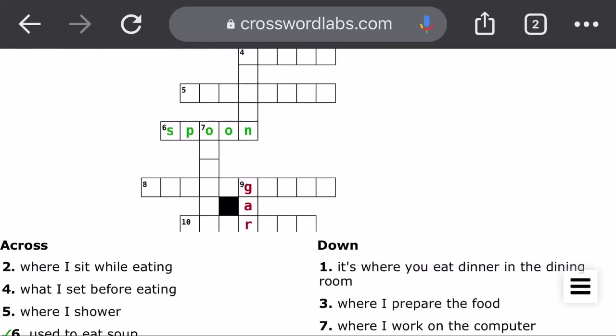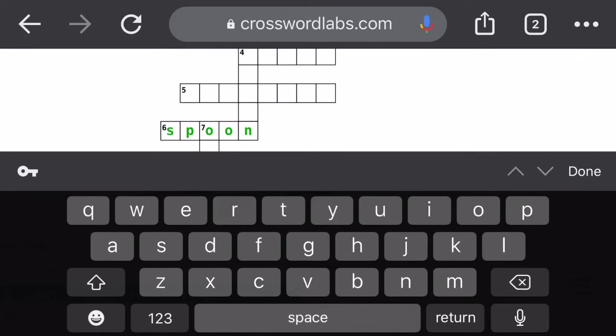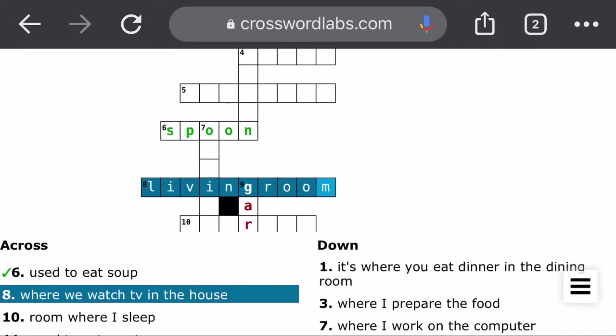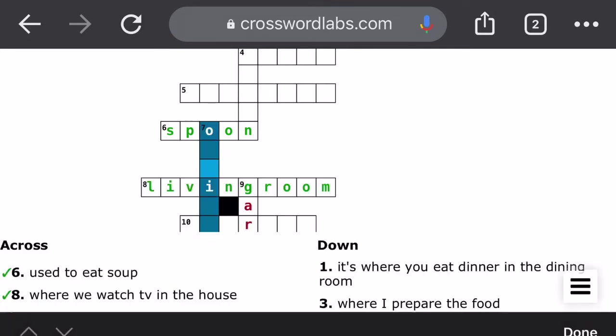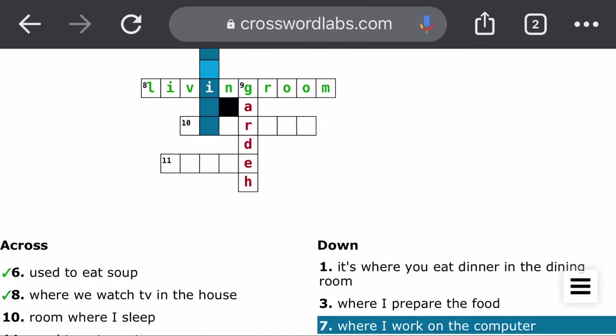So let's do one. We'll do eight across really quick, which is where we watch TV in the house. That's the living room. So the problem here is that this keyboard comes up and it's kind of hard to see what you're typing. Living room. Okay. And you can see it turned green because I got it correct.